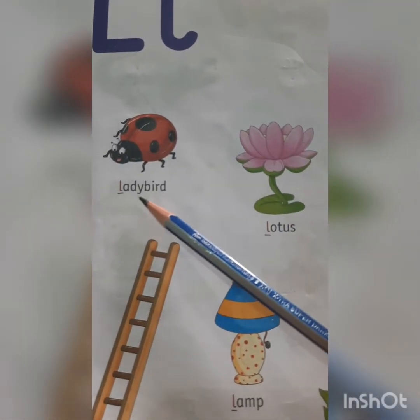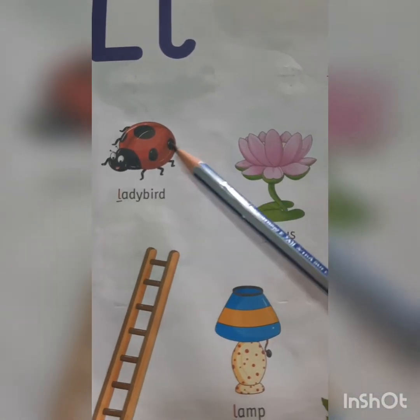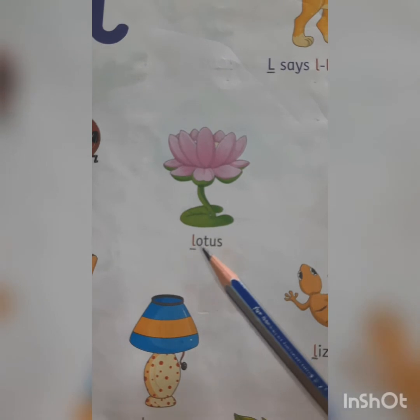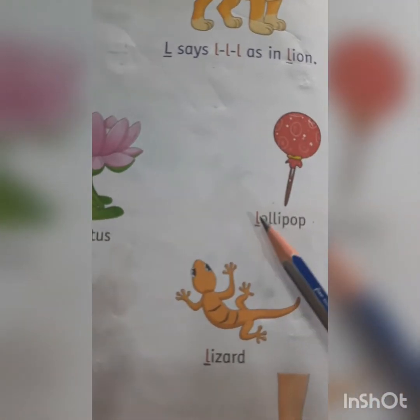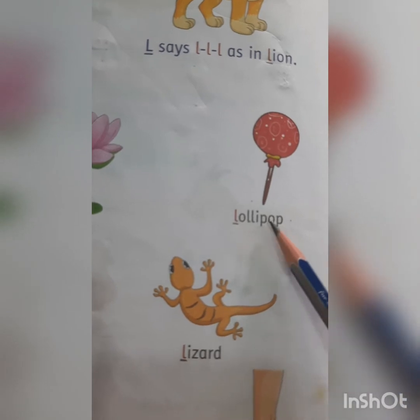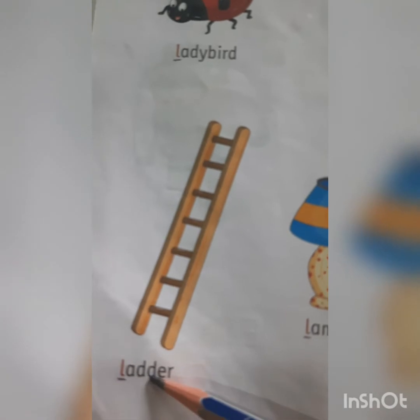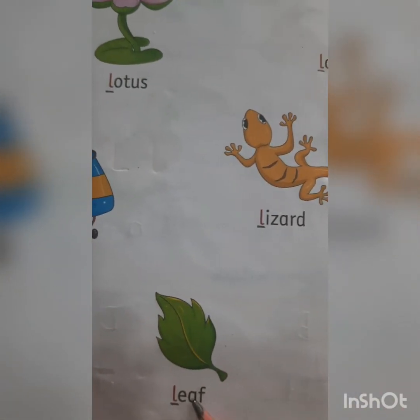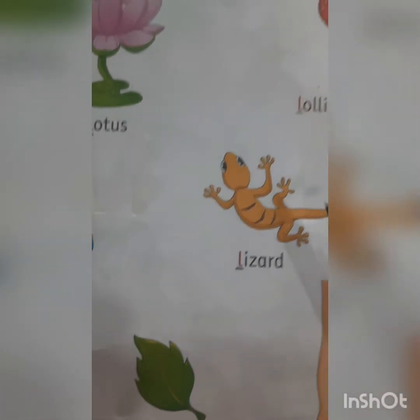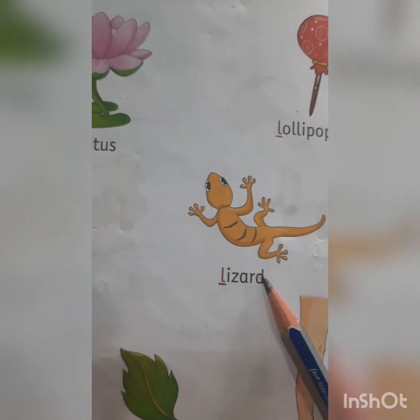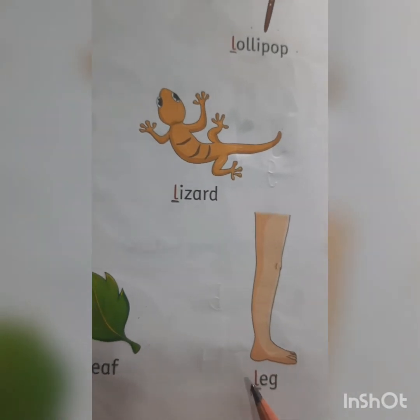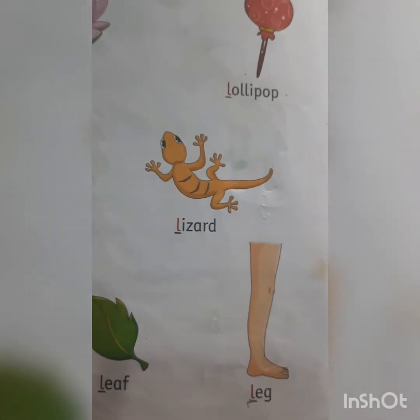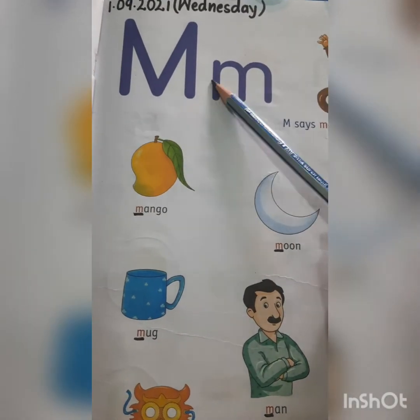L-A-D-Y-B-I-R-D. Ladybird. L-O-T-U-S. Lotus. L-O-L-L-I-P-O-P. Lollipop. L-A-D-D-E-R. Ladder. L-A-M-P. Lamp. L-E-A-F. Leaf. L-I-Z-A-R-D. Lizard. L-E-G. Leg.